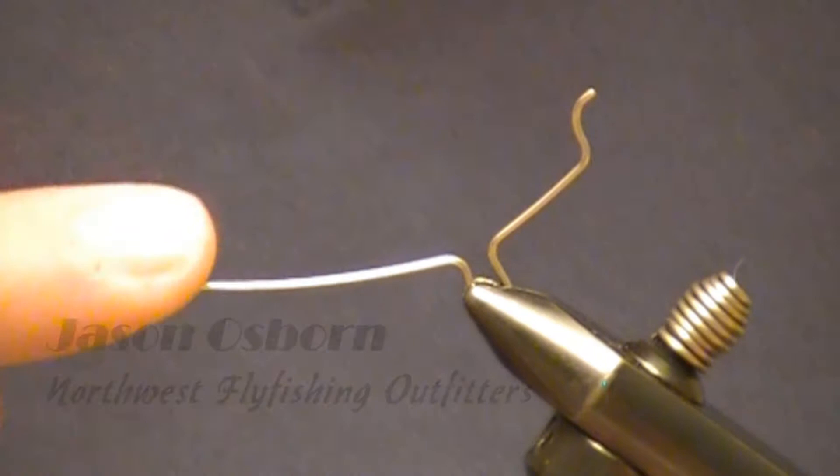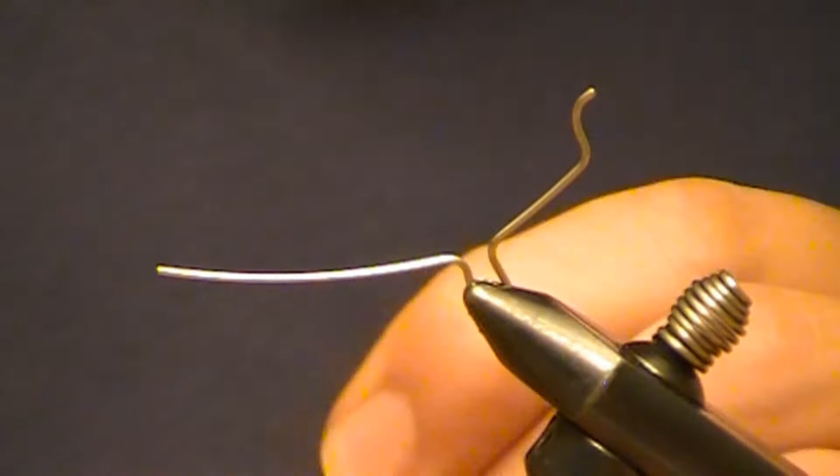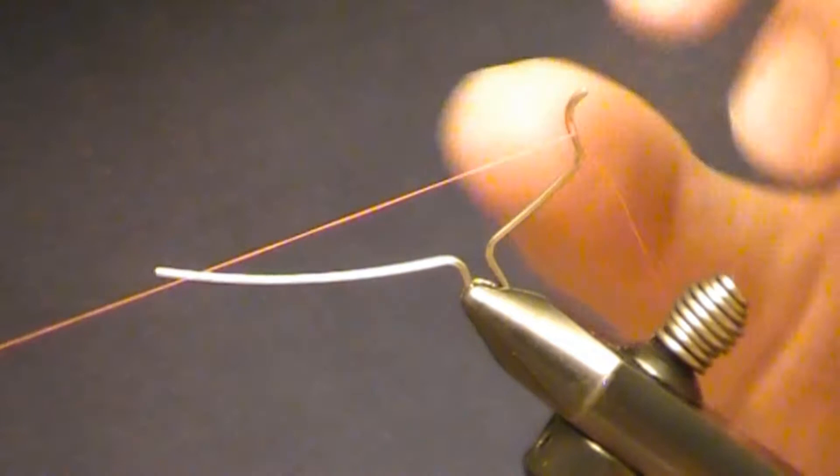What I have here is the new hairline extended body tool they came out with this year. It's really made extended body tying a lot easier, fits perfectly into your vise and has a really nice tying point. Go ahead and tie in your thread and move your thread down.